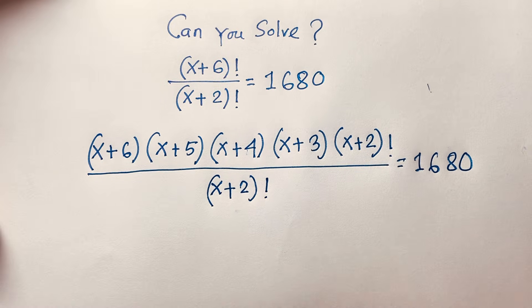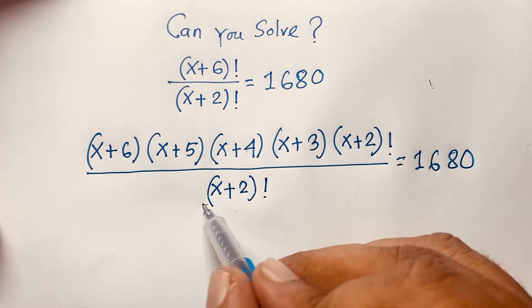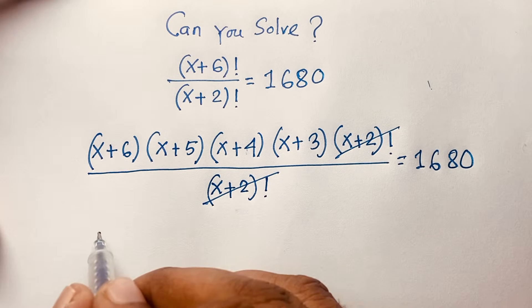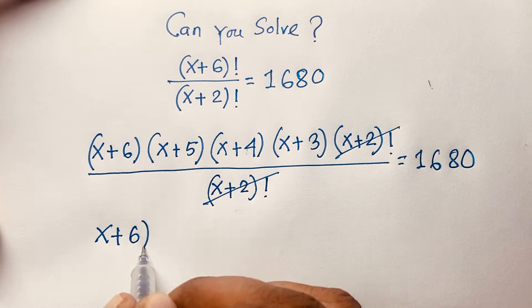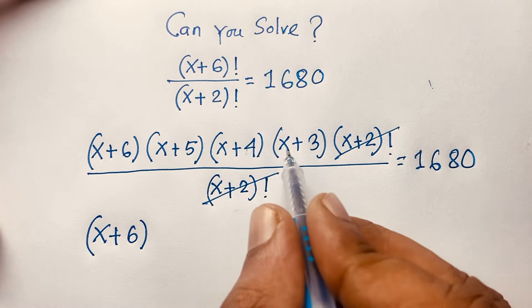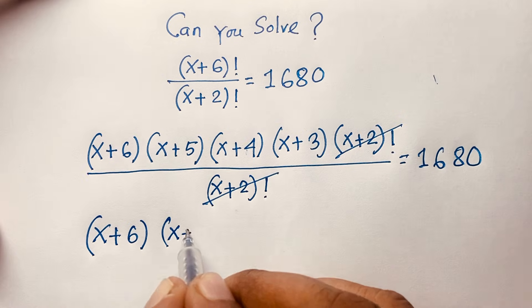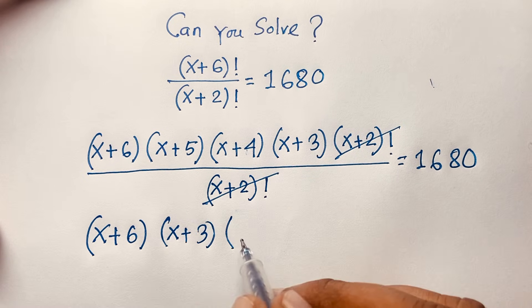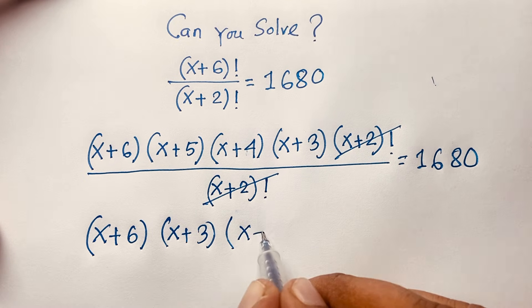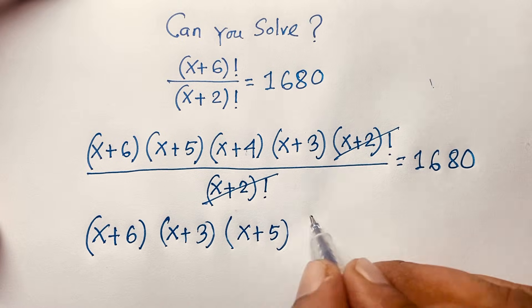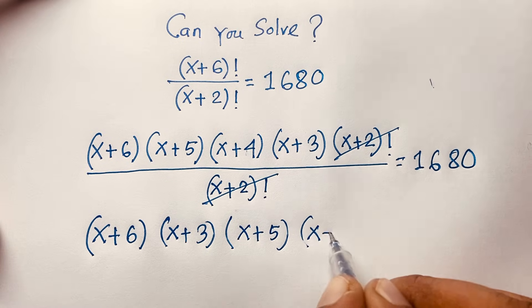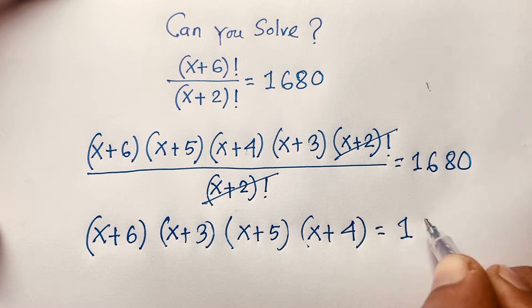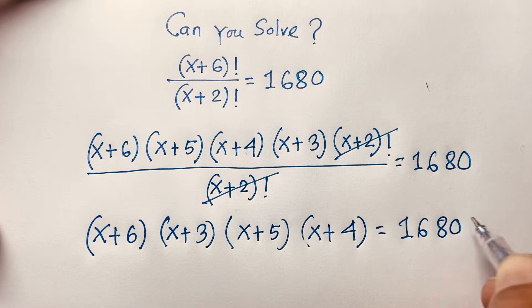Now at this moment, you can easily see these (x+2)! terms cancel out. We find here: (x+6) times (x+3) times (x+5) times (x+4) equals 1680.